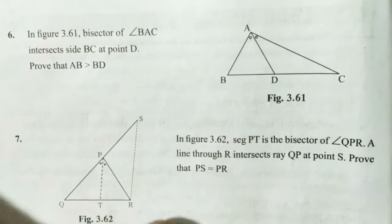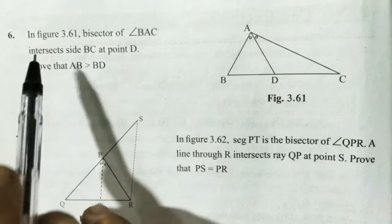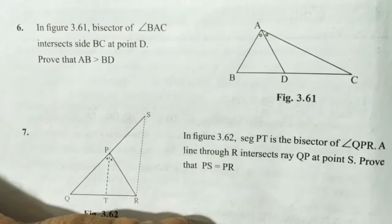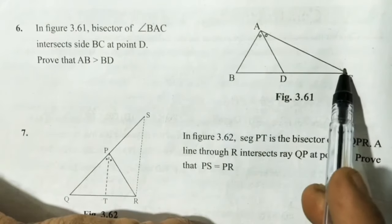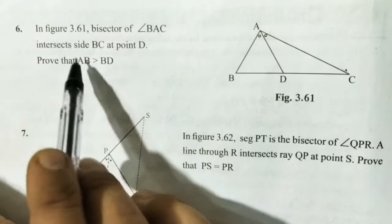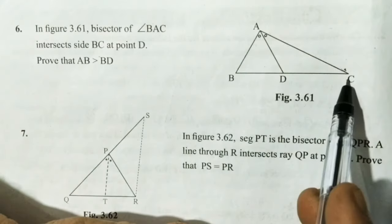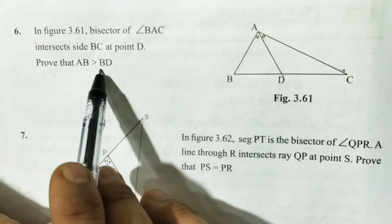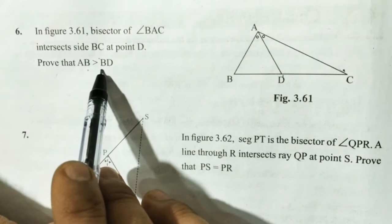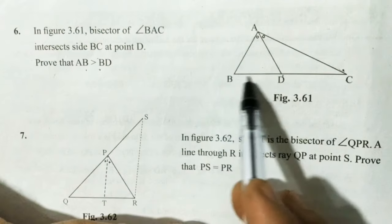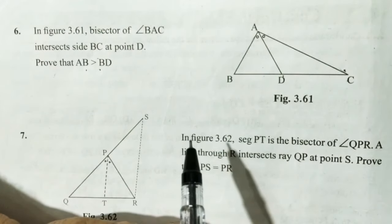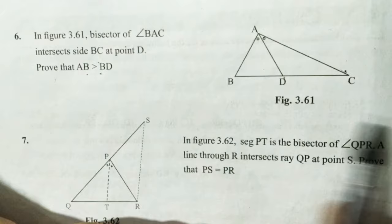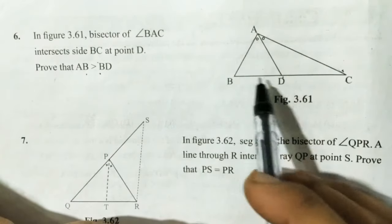Next is question number 6. In figure 3.61, the bisector of angle BAC intersects side BC at point D. We need to prove that AB is greater than BD. This sum is also very simple — only 4 to 6 steps, not a lengthy sum.